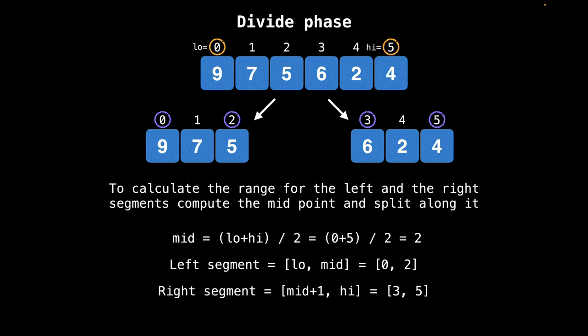To perform a segment split, we need to locate the midpoint of the segment. We can do this by taking the average of low and high, that is low plus high divided by two. And with that information, we can determine the new bounds of the left and the right segments. In the example on the screen, the low endpoint of the segment is zero and the high endpoint is five. So the midpoint is two after integer division. And once we know the midpoint, we can split the segment into the left one being from low to the midpoint and the right one from the midpoint plus one to high.